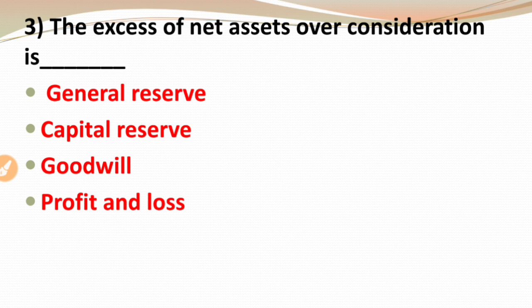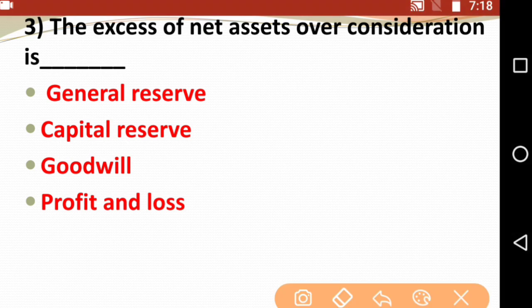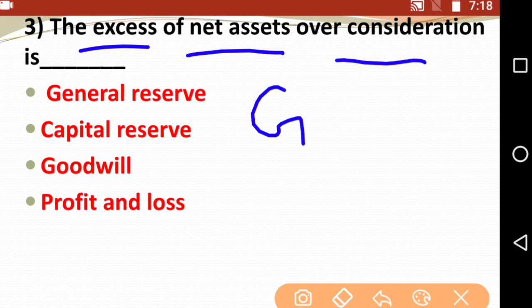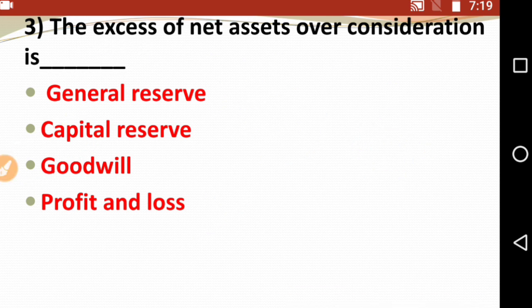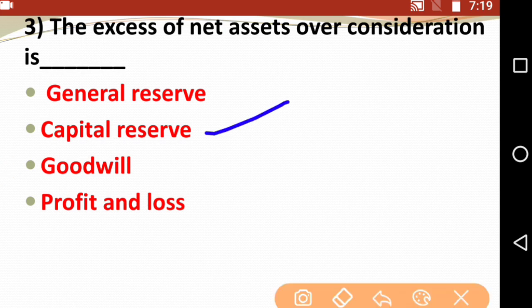Third MCQ: The excess of net assets over consideration is? If your net assets are more than the consideration, what will it be called? Remember, the balancing figure can be either goodwill or capital reserve — those are the only two options. The excess of net assets over consideration is called capital reserve. So the correct answer is capital reserve.